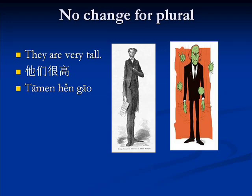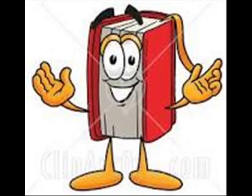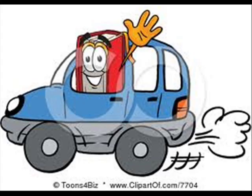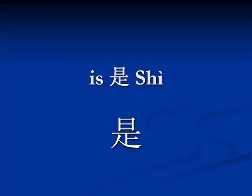'Tall' doesn't change no matter how many subjects we have. For example, 'they are very tall' — 'Ta men han gao.' In Chinese, what you are saying is 'he is being tall,' or 'the book is being read,' or 'the car is being old.' So they don't need to use the verb 'to be' because it's already included in the state of verb.